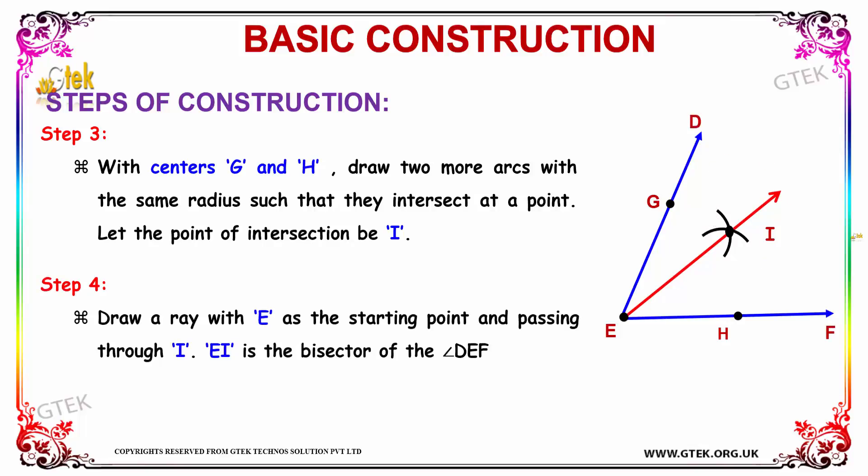And the next step is, we are going to draw a ray with E as the starting point. You can see E, this is the starting point, and we are going to pass through I which is nothing but the point of intersection. Now we can explain that EI is the bisector of the angle. Hope you got an idea of how to do this kind of bisecting in terms of basic construction.